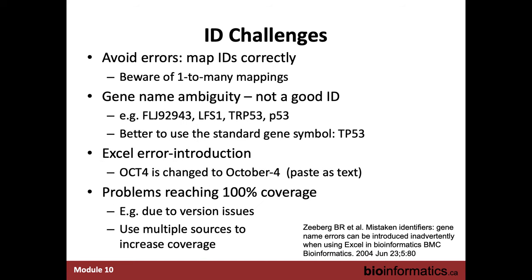What identifier mapping challenges do we need to worry about? We need to avoid errors and map genes correctly. In many cases there would be mappings between a single gene and multiple alternative identifiers. If you're using an older platform for experimental analysis, some of those identifiers may not map correctly to current identifiers, leading to losses in your pathway enrichment analysis or worse — pointing to a different gene overall. Gene names are ambiguous, so you need to use a particular kind of identifier that provides just one identifier per gene and not multiple aliases.